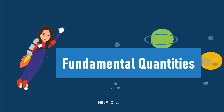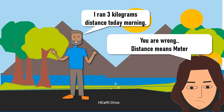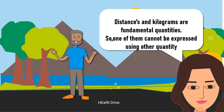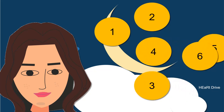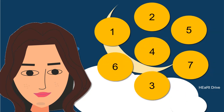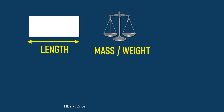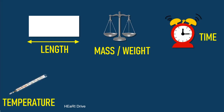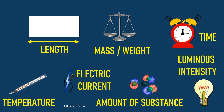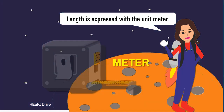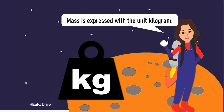Fundamental quantities are quantities which deal with basic measurements and cannot be expressed in terms of any other quantities. There are seven fundamental quantities in the International System of Units. They are length, mass, time, temperature, electric current, amount of substance, and luminous intensity.